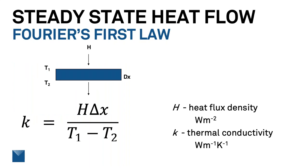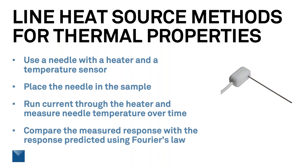The basis for steady state methods is the establishment of a steady one-dimensional heat flow through the material under test, then measuring the heat flux density — H in the equations — the thickness of the material, delta x, and the temperature difference across it. The thermal conductivity is computed by multiplying the heat flux density by the thickness and dividing by the temperature difference.